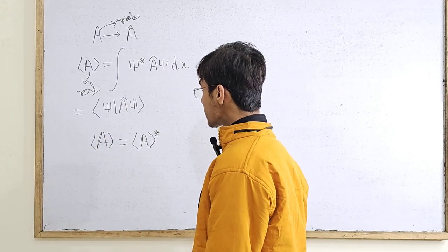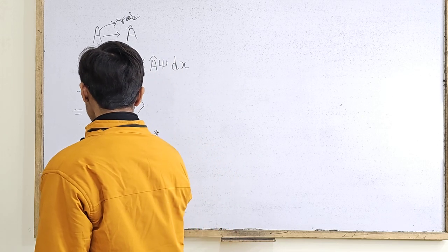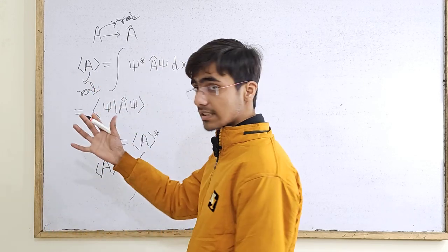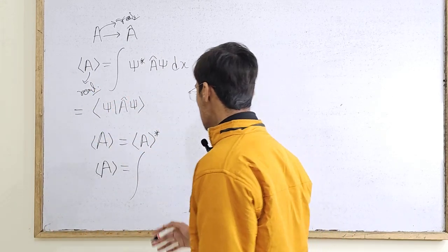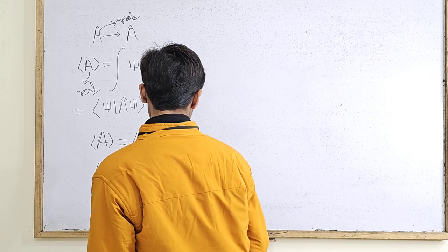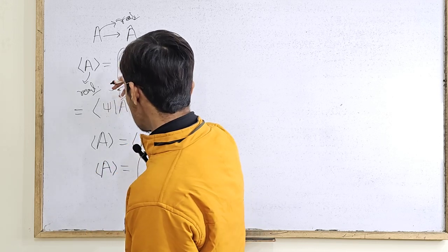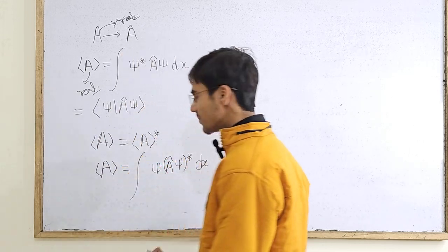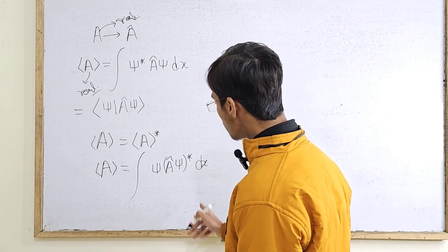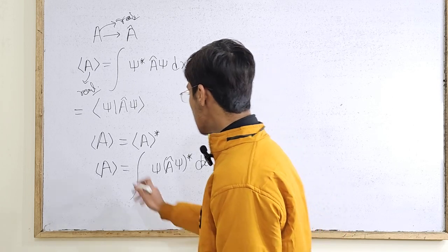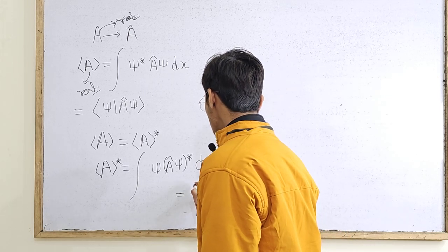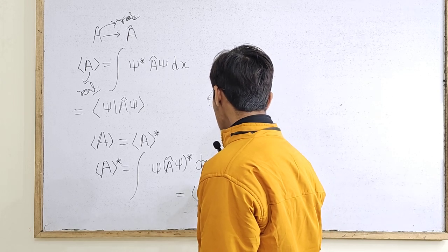What is the conjugate of the expectation value? Going back to the equation, the conjugate of the expectation value is: the integral of psi-conjugate — taking another conjugate gives psi — times A-hat psi, conjugated, dx, integrated over all space from negative to positive infinity. This can be written as the inner product of A-hat psi and psi.